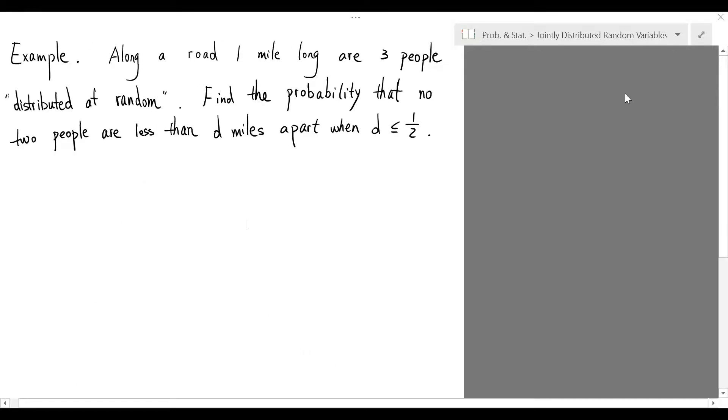We are now ready to look at a classical application of order statistics. Let's work on the following problem. Along a road one mile long are three people distributed at random. Find the probability that no two people are less than d miles apart when d is no more than 1 half.